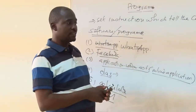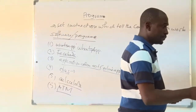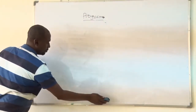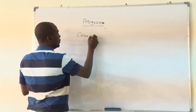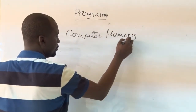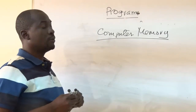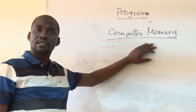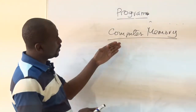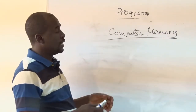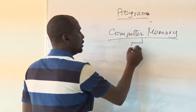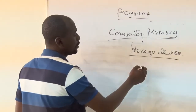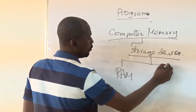After understanding what a program is, let me explain a little about the inside of the computer. I want to talk about computer memory. There is no way you can talk about programming without talking about computer memory. The computer's storage device is divided into two parts: we have the RAM and we have the ROM.